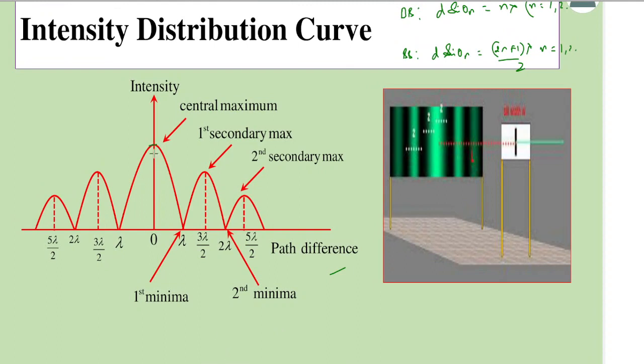If you look at the curve carefully, the intensity of the central maximum is maximum. Then for the next maximum, called the secondary maximum, this is called the first secondary maximum, second secondary maximum, third secondary maximum, and so on. They have decreasing intensity as seen here in the diagram.